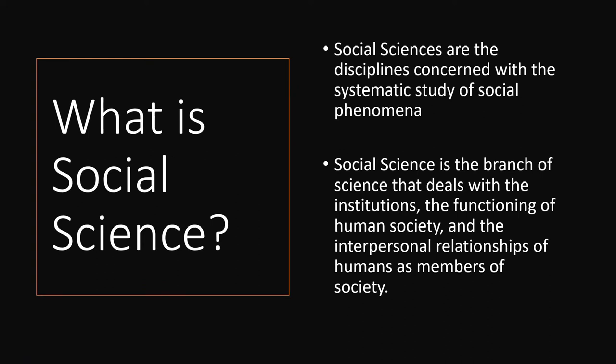What is social science? Social sciences are the disciplines concerned with the systematic study of social phenomena. Social science is the branch of science that deals with institutions, the functioning of human society,